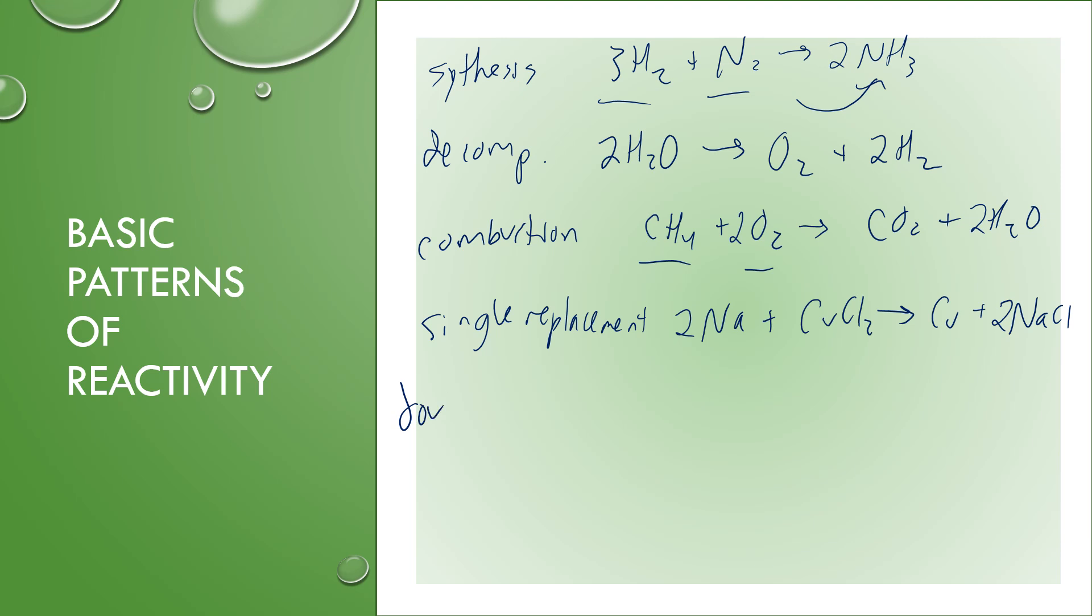And then the last type would be double replacement. So something where you have two compounds, and then the first two elements are going to swap partners. So that would be a double replacement reaction. Now these are some just general patterns. We're also going to go through different types of reactions like redox reactions and acid-base reactions and then like gas-producing reactions. But this should get us started on some different patterns of things that you're going to see for chemical equations.